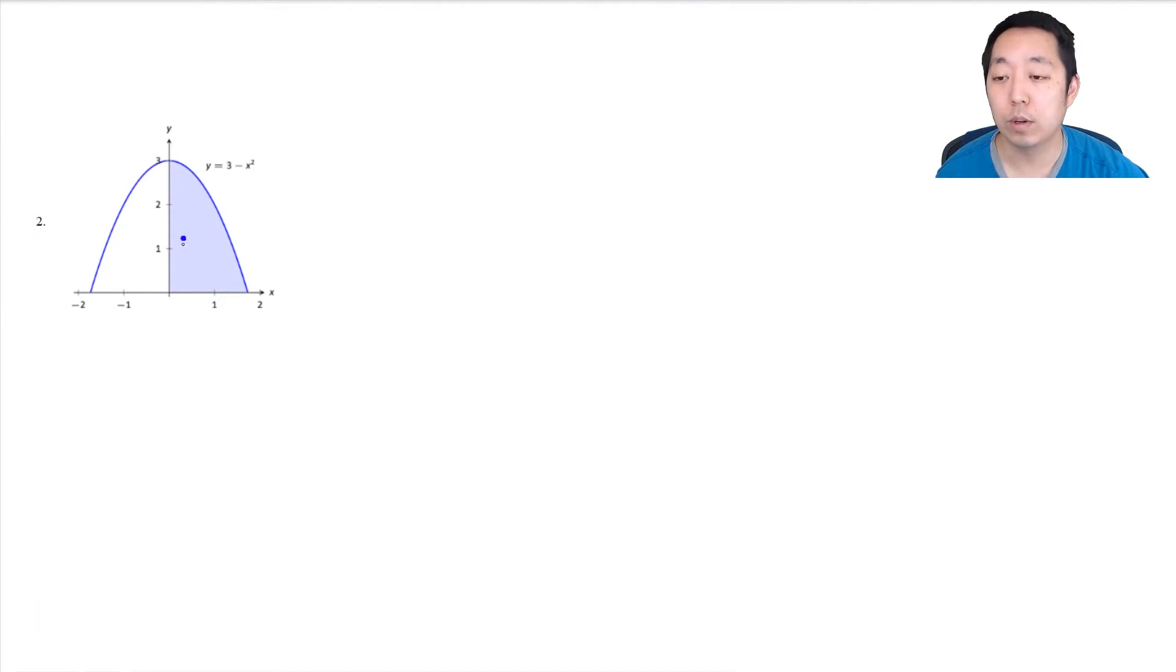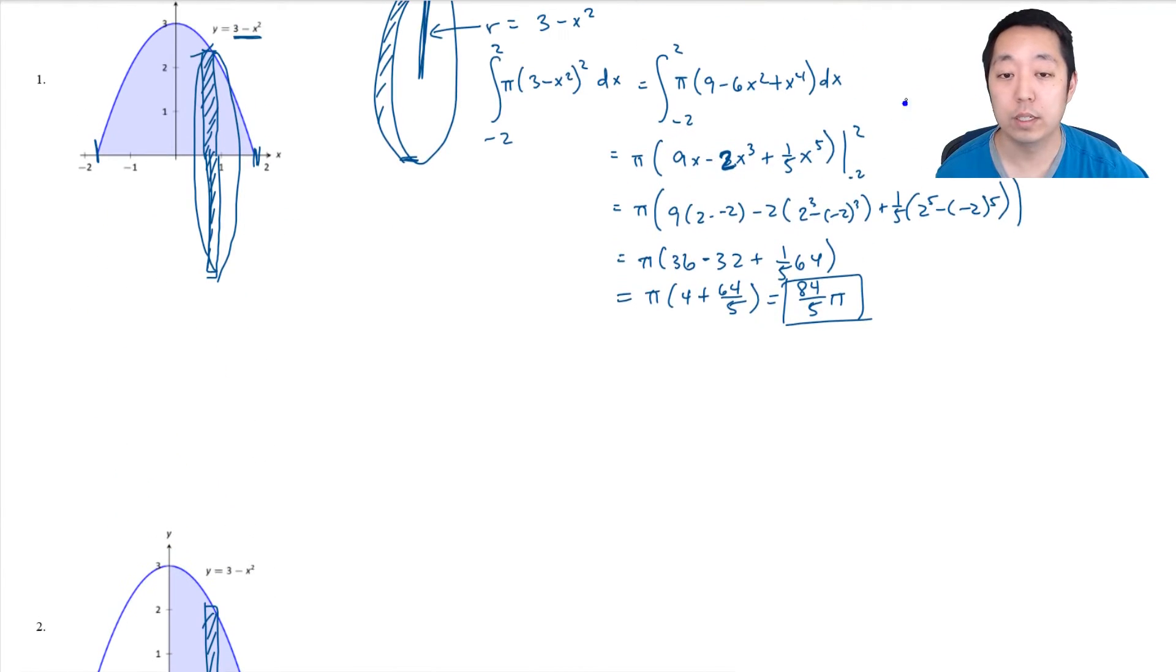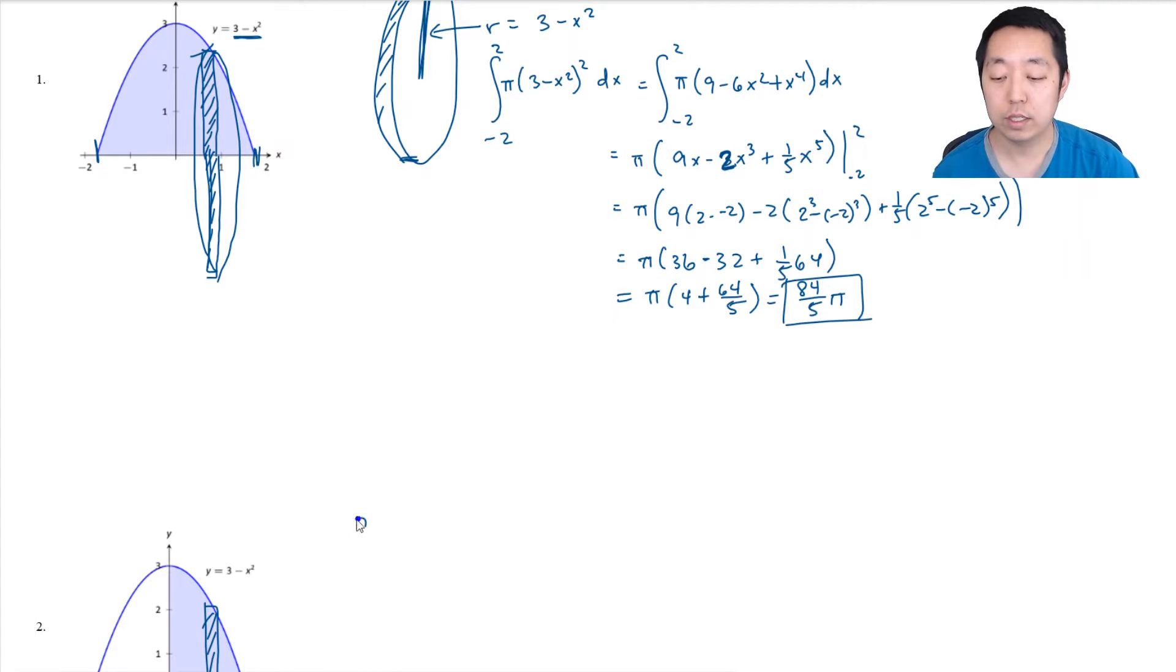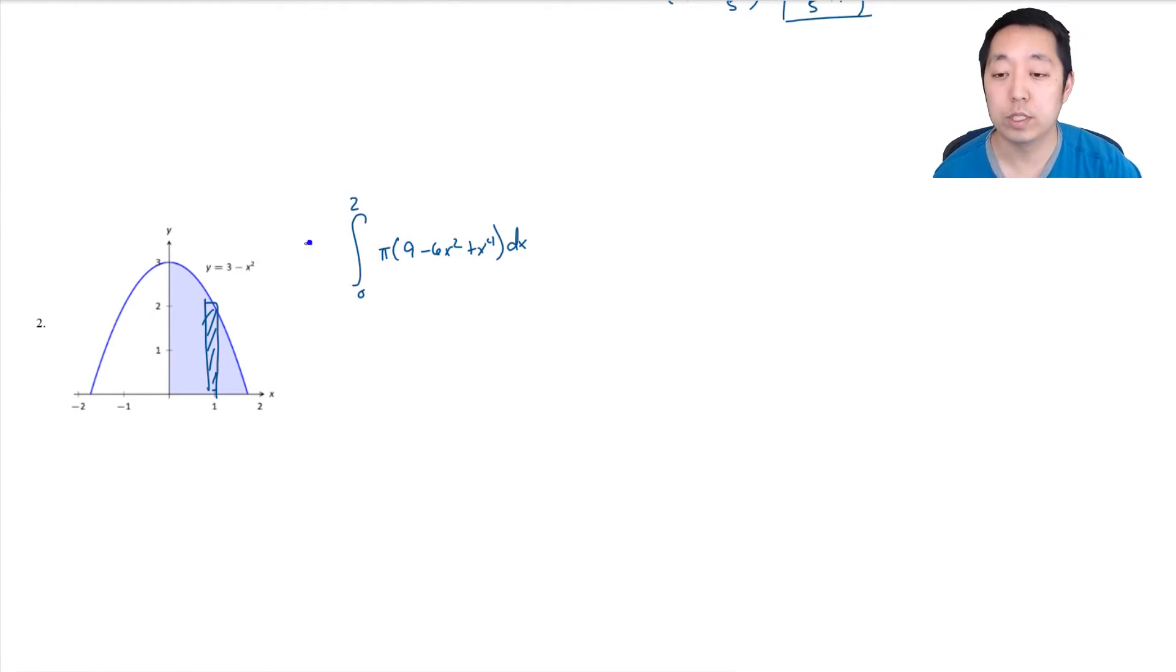We're going to do the exact same thing, but we're only doing half of the region here. So it's the exact same integral setup as before. It's going to be π r², but now I'm only adding up all the disks from 0 to 2. So I'm integrating from 0 to 2 of π(9 - 6x² + x⁴)dx. We just simply do π(9x - 2x³ + (1/5)x⁵) and we're doing it from 0 to 2.